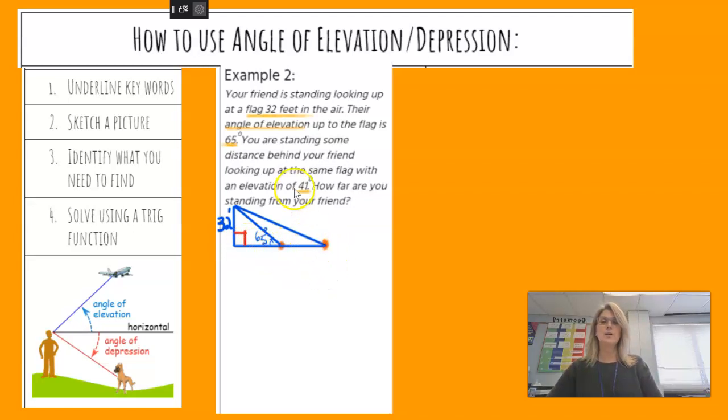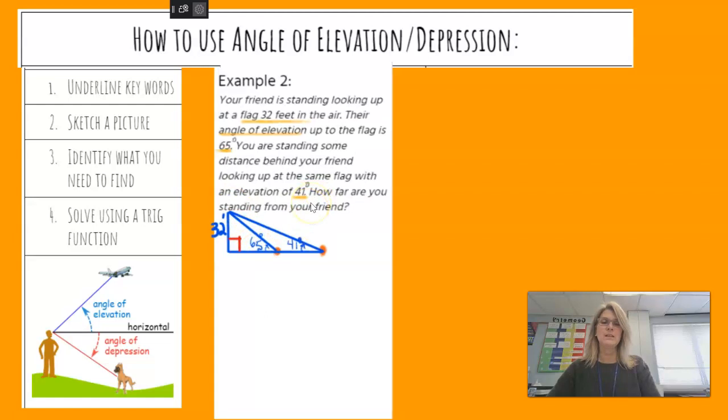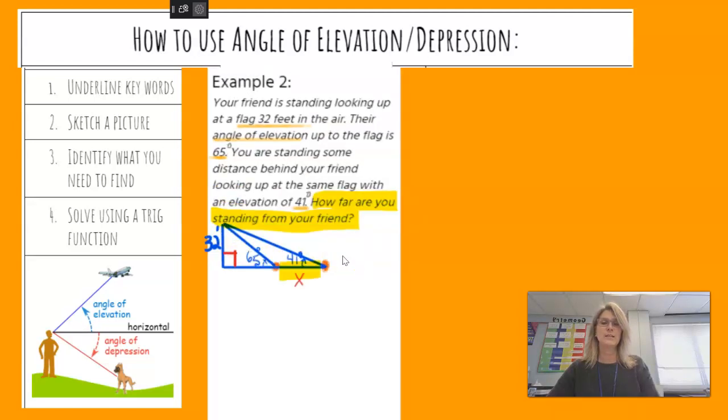So you have a question here. It asks, how far are you standing? But let's put in, we know the 65 degrees is the angle of elevation from your friend looking up, and then the 41 is for you looking up at the same point on the flagpole. The question asks, how far are you from your friend? So this little portion here is what we have. So we've got to problem solve this.